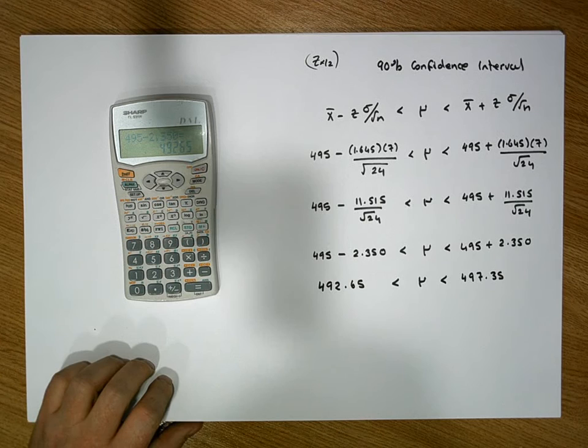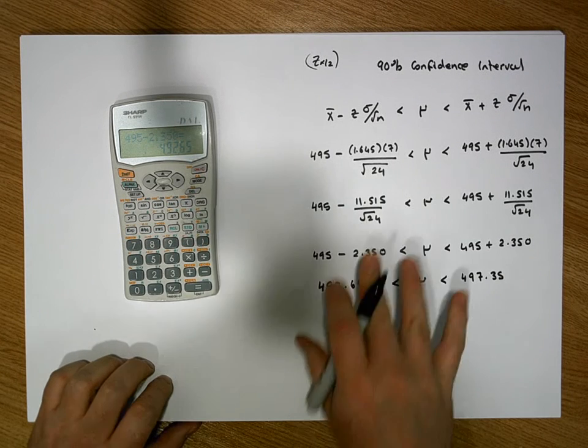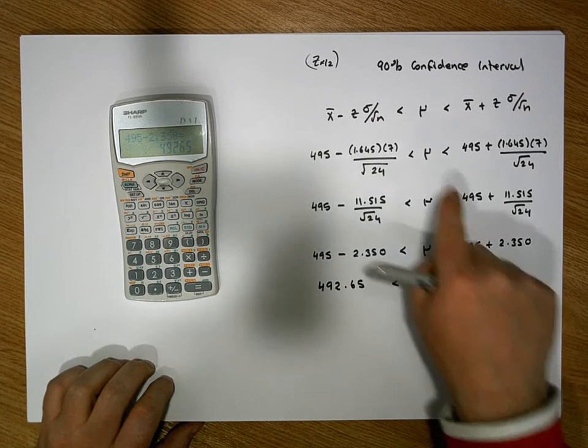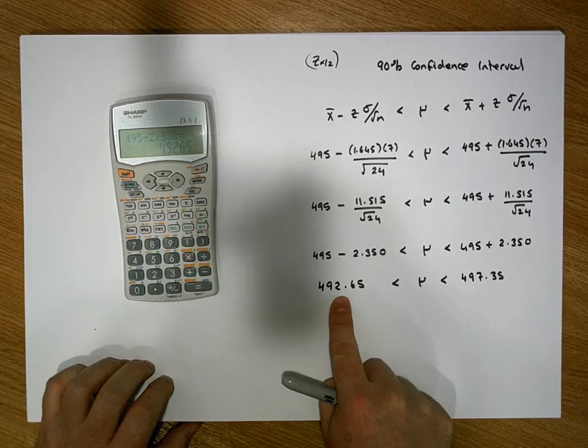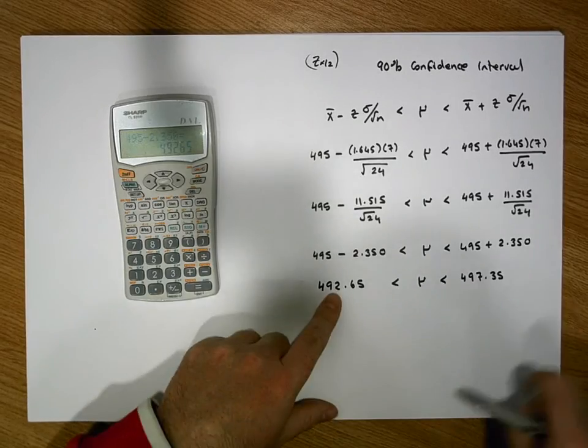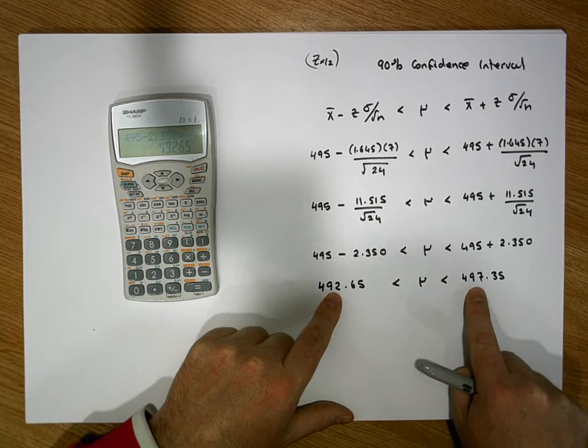And that's us done. So what we've actually effectively done is this, is that we've calculated a lower bound, 492.65 mils, and we've calculated an upper bound, 497.35 mils.